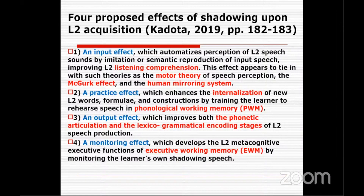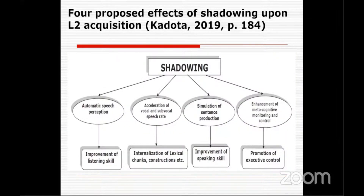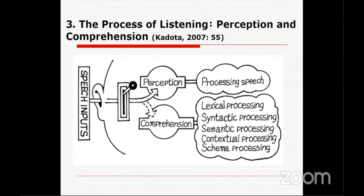Today I want to concentrate on the first — the input effect of shadowing in listening comprehension. This figure summarizes the four effects of shadowing. Listening comprehension basically consists of two stages: one is the perception stage, the other is the comprehension stage. In the perception stage, we construct a mental phonological representation. In comprehension, a variety of processes are involved: lexical processing, syntactic and semantic analysis, contextual processing, and schema-based processing.